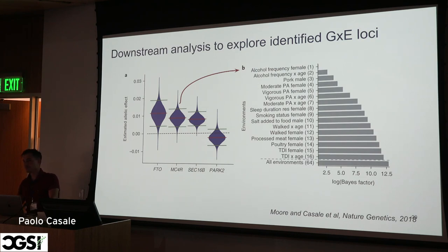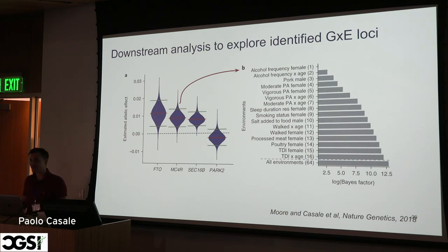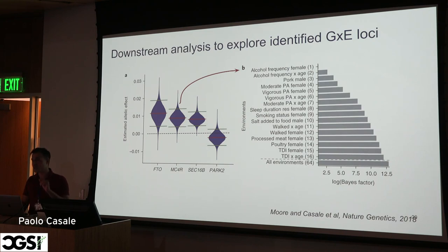If you use all genetic variants and fit a genomic relationship matrix under the mixed model framework, you can estimate SNP heritability. People have done that — I think Andy Dahl has a method doing this across multiple genetic variants and multiple environments — but StructLMM is designed for single-variant G×E interaction tests with multiple environments, so that's not within scope here.